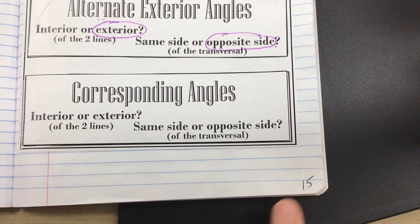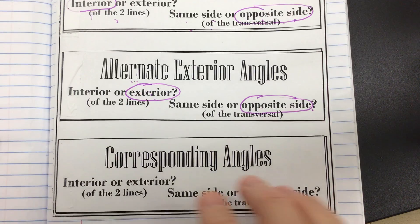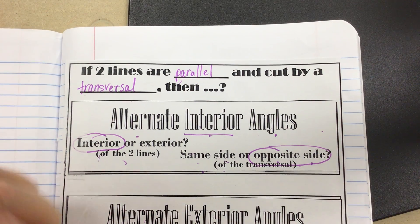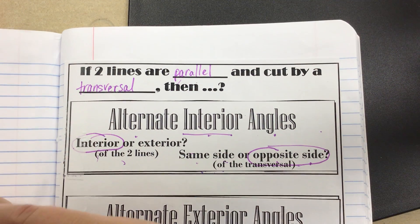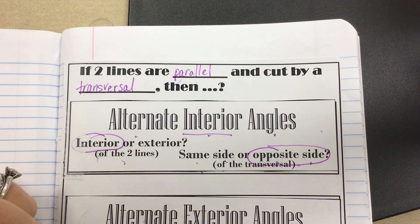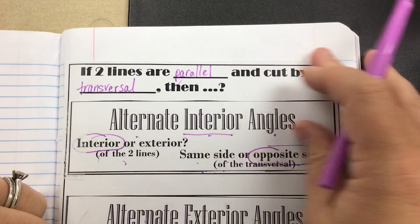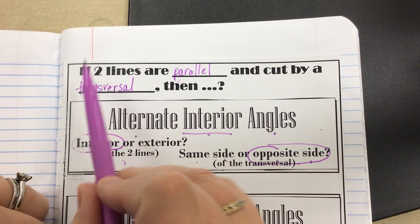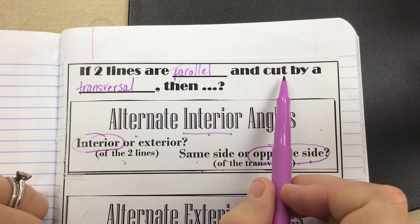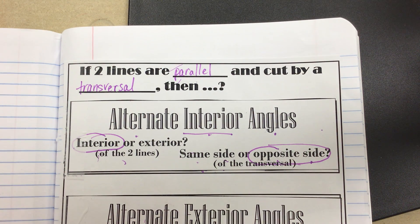Starting off on page 15 with the alternate interior, alternate exterior, and corresponding angles. The majority of the statements we're going to make about these pairs of angles are based on the fact that you have to have parallel lines cut by a transversal. At the very top of the page you're going to fill in: if two lines are parallel and cut by a transversal, then what we're going to say is going to be true about this page.